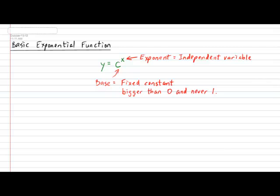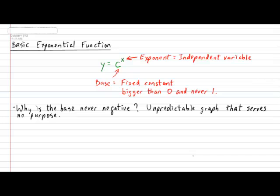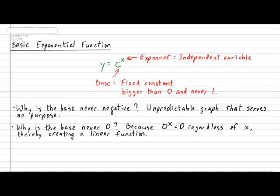Now, the big question is, why must the base be bigger than 0? In other words, it can never be negative. Well, the main reason is the following. The base can never be negative because it will create a very unpredictable graph which has absolutely no application purposes. The second big question is, why can the base never equal 0? Well, for this, it's a very easy explanation. It's because if the base was 0, then 0 exponent anything will always be 0, thereby creating a linear function, which essentially defeats the purpose of exponential functions.